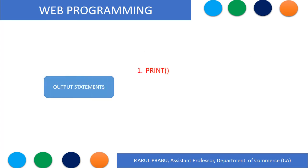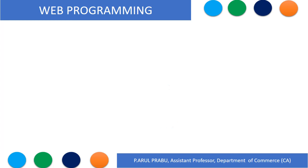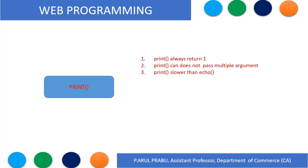Output statements. PHP has three output functions: print, printf, and echo. Echo does not return any value and is capable of outputting multiple strings. Echo is faster than the print statement. Print can accept multiple arguments and print is slower than echo.